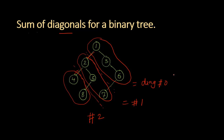The problem is to find out the sums for each diagonal. Our subroutine should return sum as 10 for diagonal 0, 14 for diagonal 1, and 12 for diagonal 2.